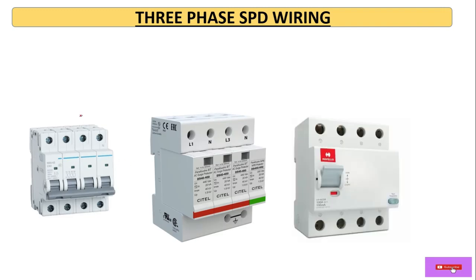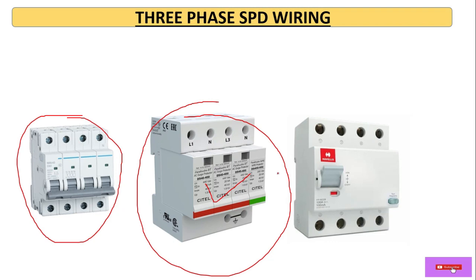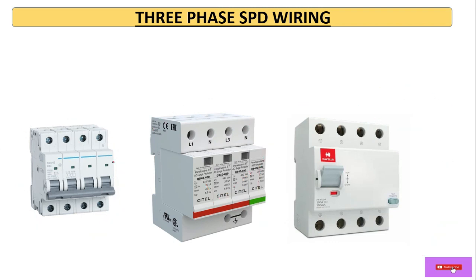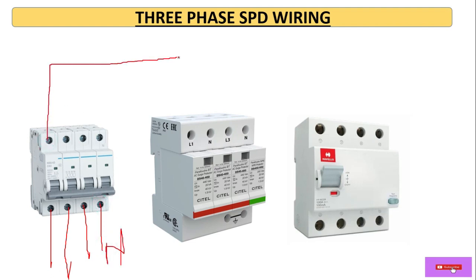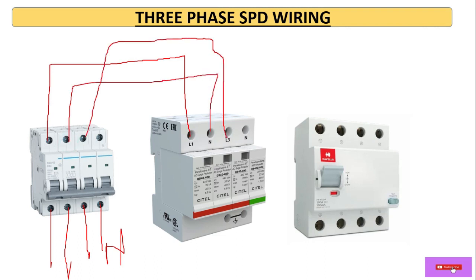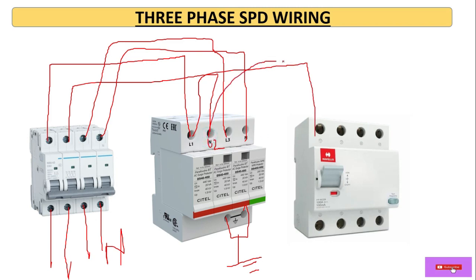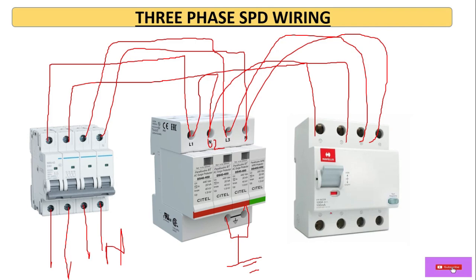Now let's look at the three phase SPD, which is similar to the single phase connection. Here we have taken a four-pole MCB, a four-pole SPD, and a four-pole RCCB. We connect R, Y, B, and neutral from the output of the MCB to the SPD terminals L1, L2, L3, and neutral. The earth terminals are connected to earth. From there it goes to the RCCB and then to the loads. This is how it is connected in a three-phase system.